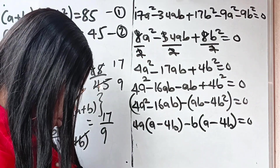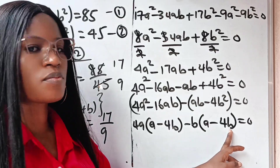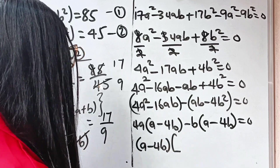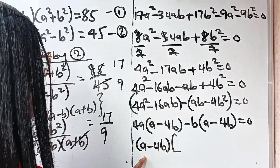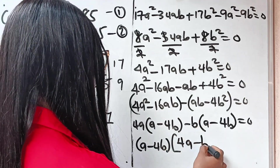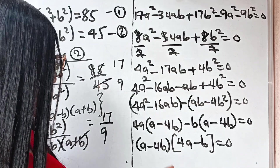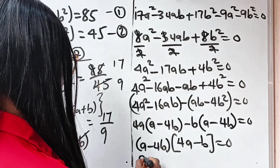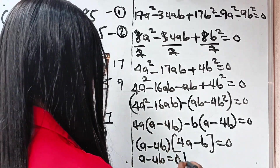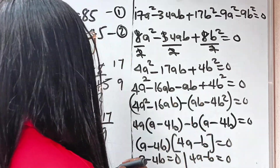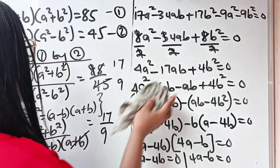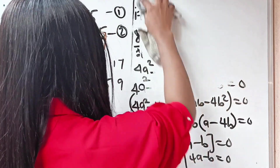You will notice that a minus 4b is common in both groups, so we bring it out: a minus 4b into 4a minus b, is equal to zero. So we have either a minus 4b equals zero or 4a minus b equals zero.